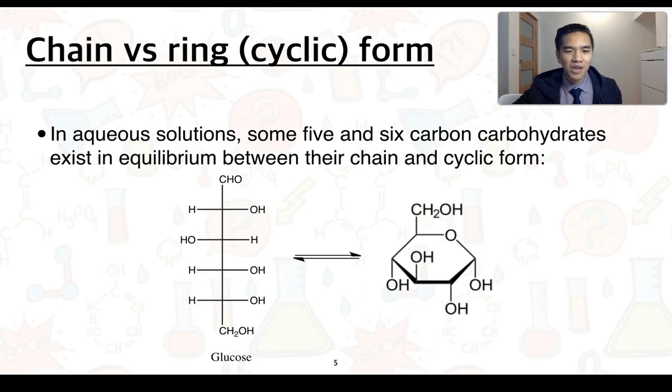One thing to keep in mind for the time being is that in aqueous solutions, some 5 and 6 carbon carbohydrates exist in equilibrium between what we call their chain and cyclic or ring form. As an example, we've got glucose here existing in a chain form, but in solution it also exists in a cyclic form. And this will be a bit more important at the end.